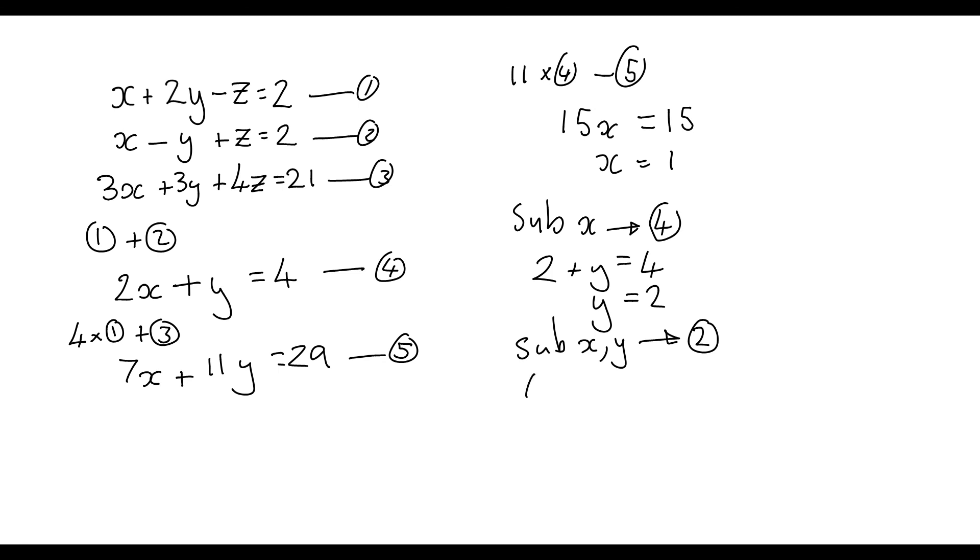X which is 1 minus Y which is 2 plus Z which equals 2. So that's going to give me Z equals 3. So my solution is X equals 1, Y equals 2 and Z equals 3.